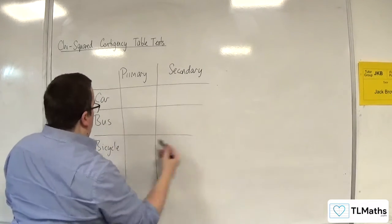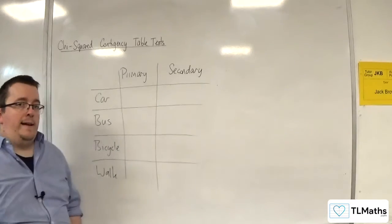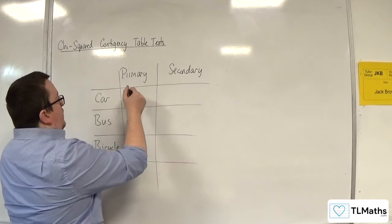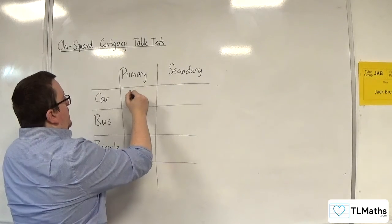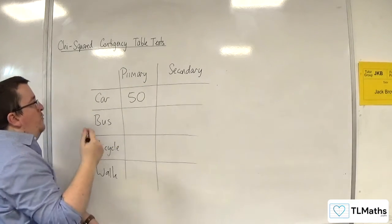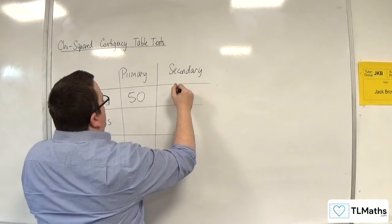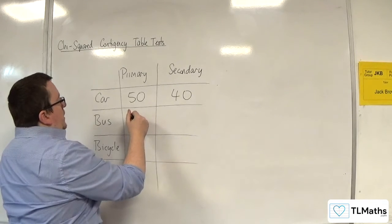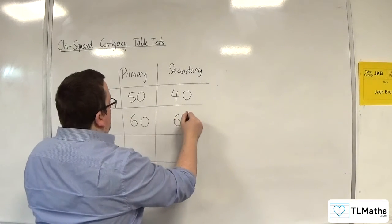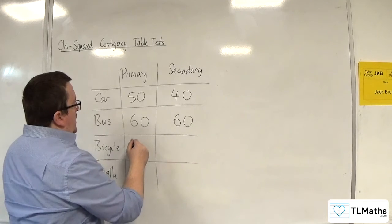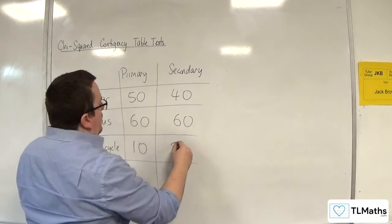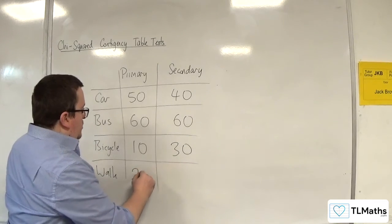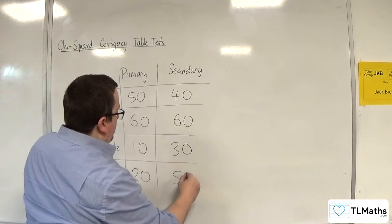What you then do is you go out and collect this data. Let's just populate it with some data. So let's say we've got 50 students in primary school getting the car, 40 students from secondary by bus, 60 students there. We've got bicycle — 10 of those and 30 of those. And we've got people walking to the school — let's say 20 of those and 50 of those.